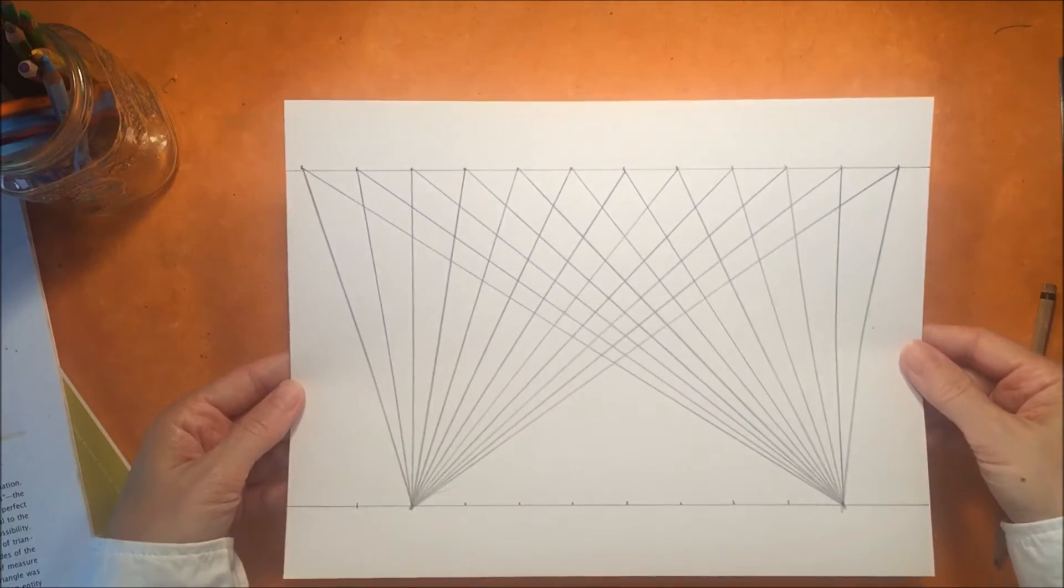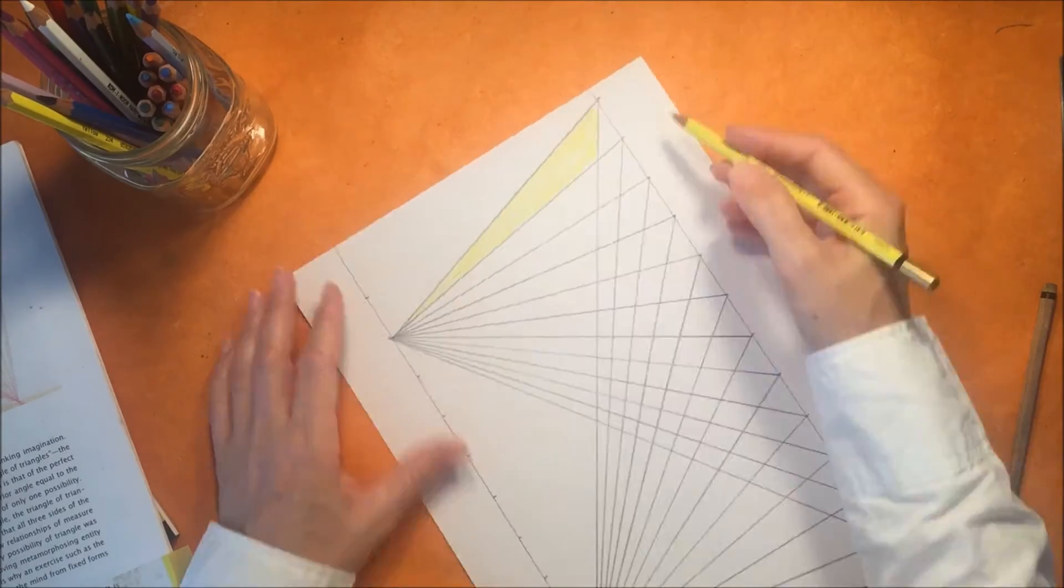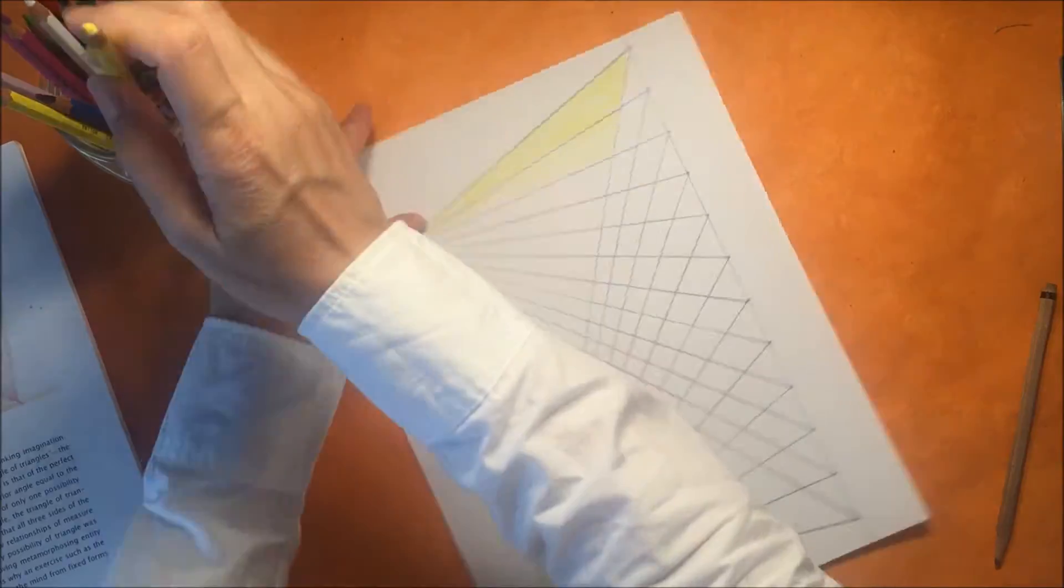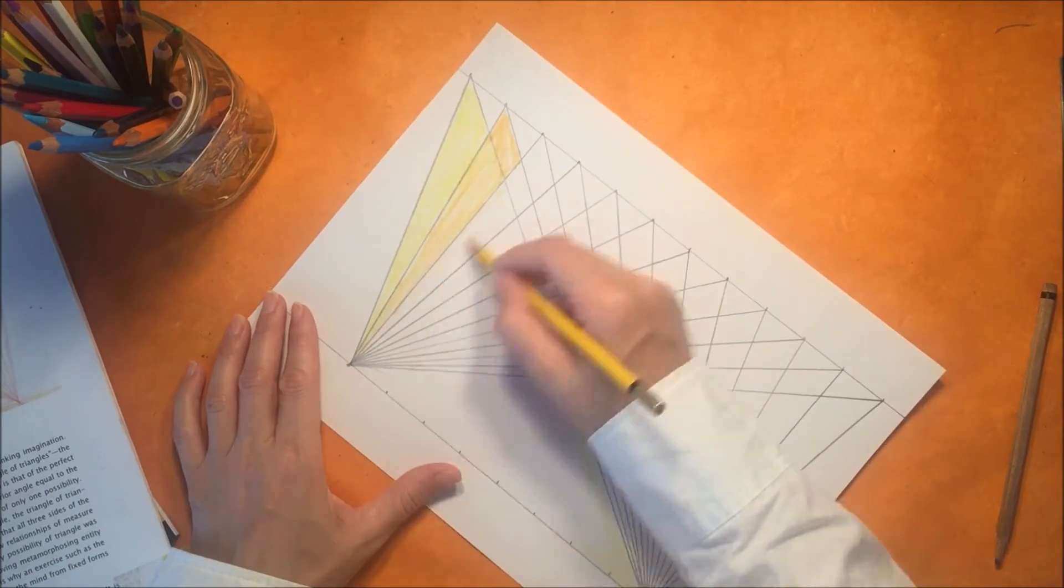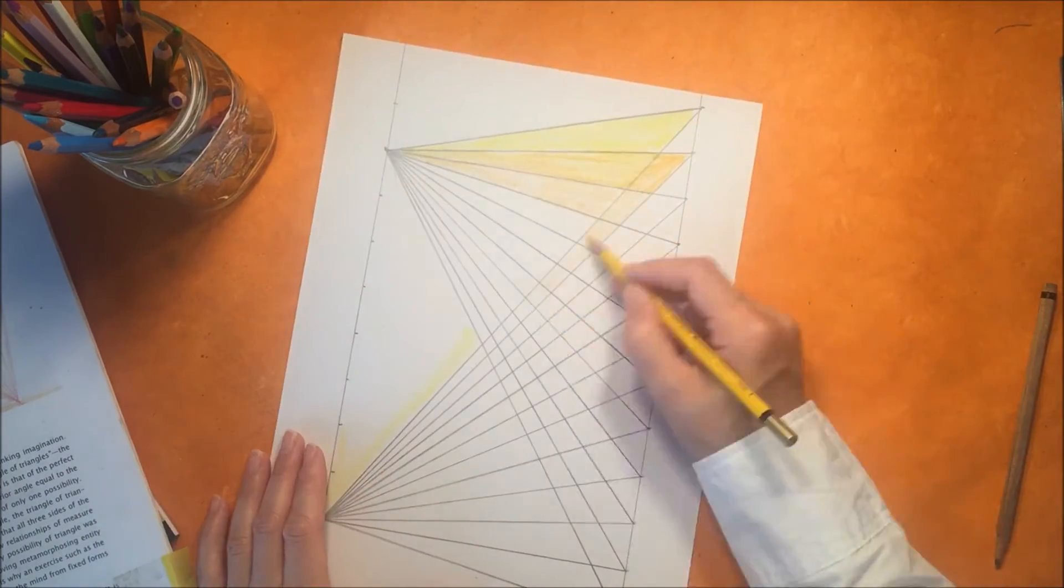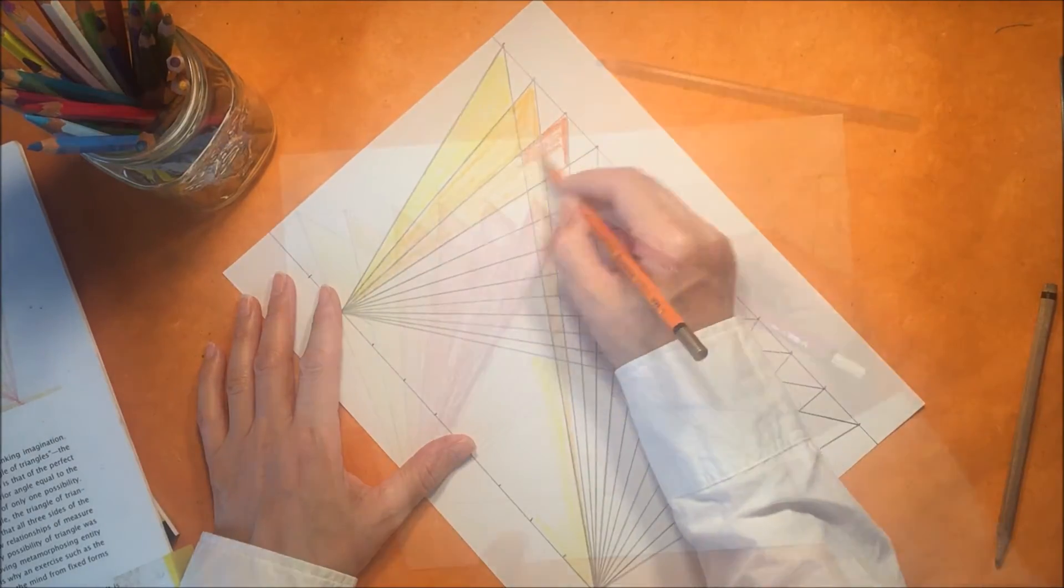Now you could stop here and leave it as a pencil drawing because it's really beautiful as it is, but we want to color ours in. I'm going to start with yellow and just go through the colors of the rainbow, ending with green on the far right side. This process goes by pretty quickly, but you could skip it and just leave it as a pencil drawing.